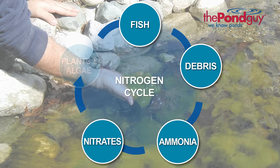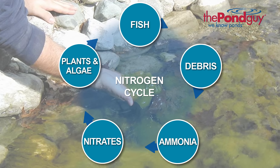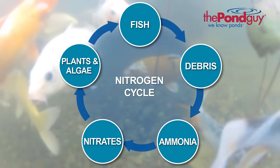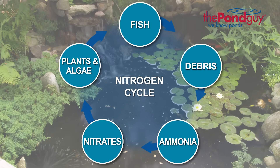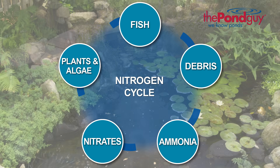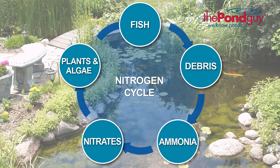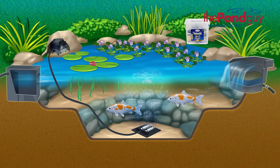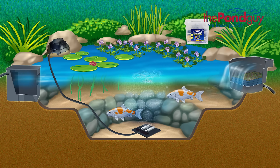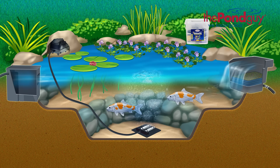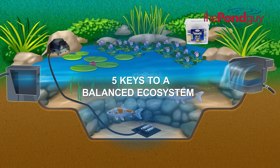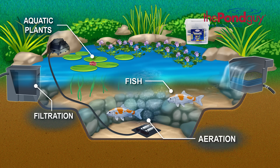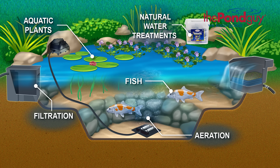Nitrates are a nutrient source and not only feed aquatic plants but fuel algae growth as well. Finally, in addition to the food you feed them, your fish will consume aquatic plants and algae, thus completing and repeating the nitrogen cycle. Because nature takes its time to establish a healthy population of nitrifying bacteria capable of maintaining this delicate balance, we put together the following five key elements to accelerate this process. The five keys to a balanced ecosystem are fish, filtration, aquatic plants, aeration, and natural water treatments.